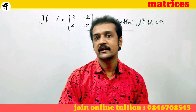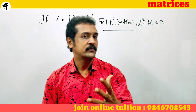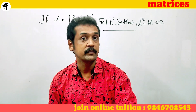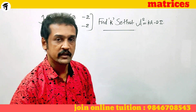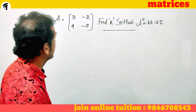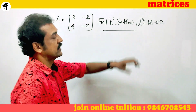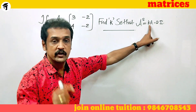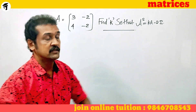If A is the matrix [[3, -2], [4, -2]], find k so that A squared is equal to kA minus 2I. This k is a scalar number — it could be 1, 2, 3, etc. — that number which will satisfy the equation.